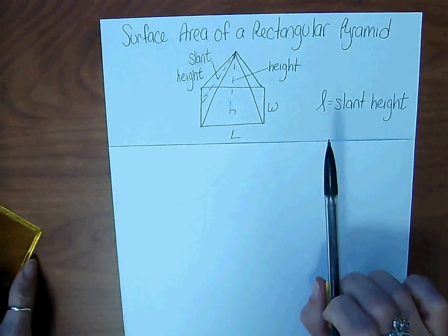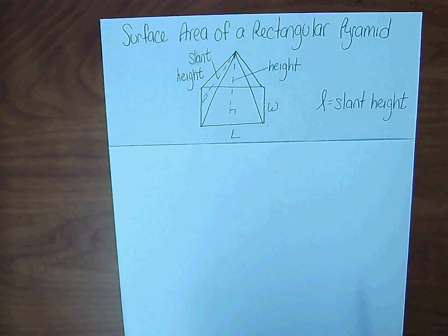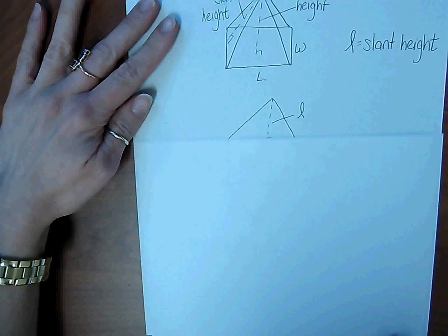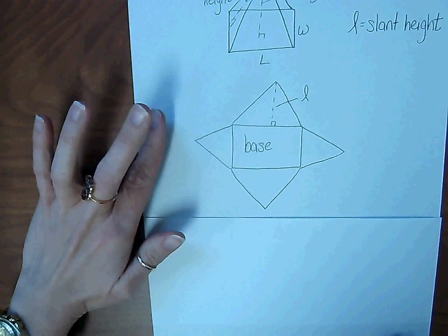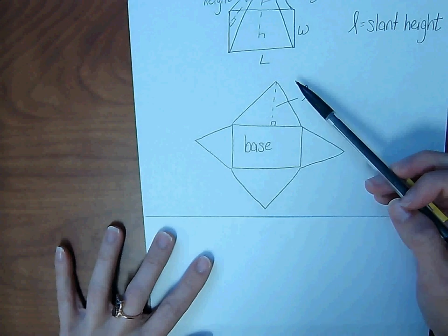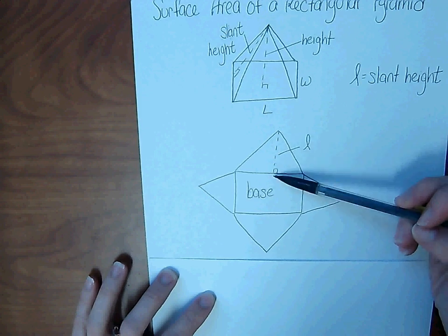If we were to take the pyramid and cut along the edges to make a net, we would have a rectangular base and four triangles. Notice the slant height of the pyramid becomes the height of the triangle.